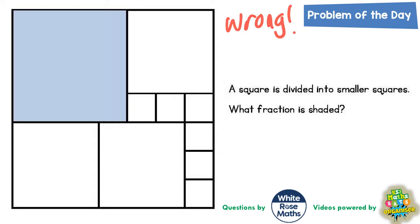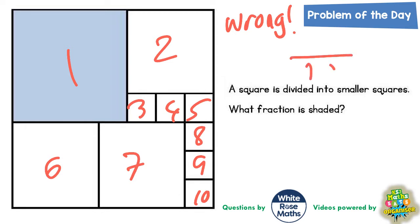Some people might just count all the squares and go 1, 2, 3, 4, 5, 6, 7, 8, 9, 10. Some people might say that it's going to be out of 10 because there's 10 squares, and that only one of them is shaded. Therefore the fraction of the square that is shaded is 1 tenth.